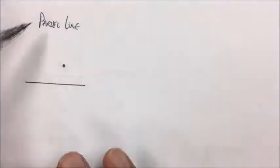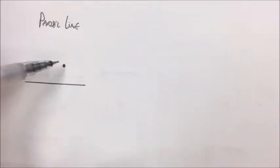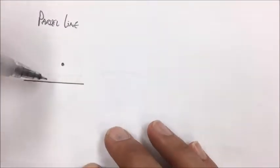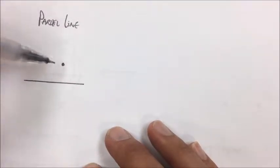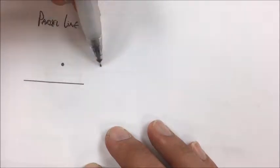So now I'm going to construct a parallel line. I have a line and a point that's not on the line. I'm going to construct a line that's parallel to this line that goes through that point. So I know it's going to look something like that.